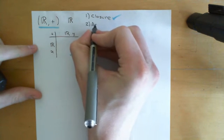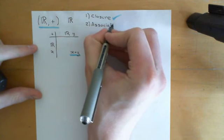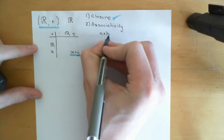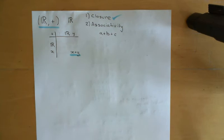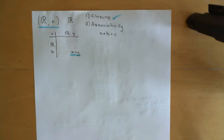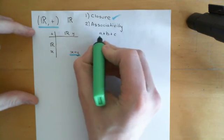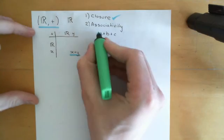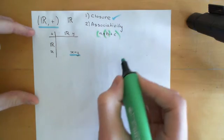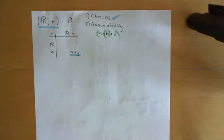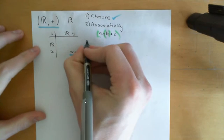Axiom number two is associativity. Hopefully you're familiar with the fact that if you add together three real numbers a + b + c, the answer doesn't depend on where you put the brackets. This is why associativity might have seemed trivial when we first defined it — in all classical algebraic structures, associativity is true. So when we add three elements together in the real numbers, it doesn't matter where you put the brackets. We can tick off associativity.